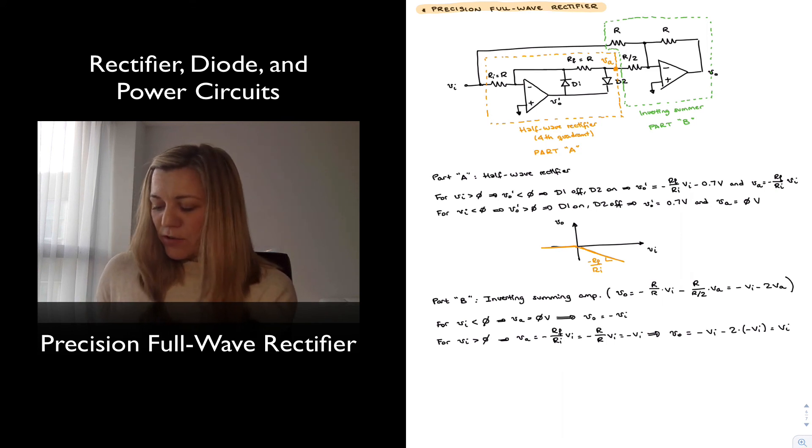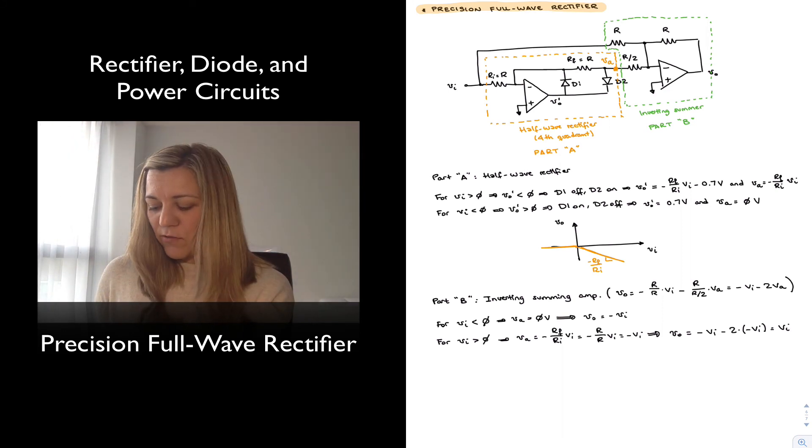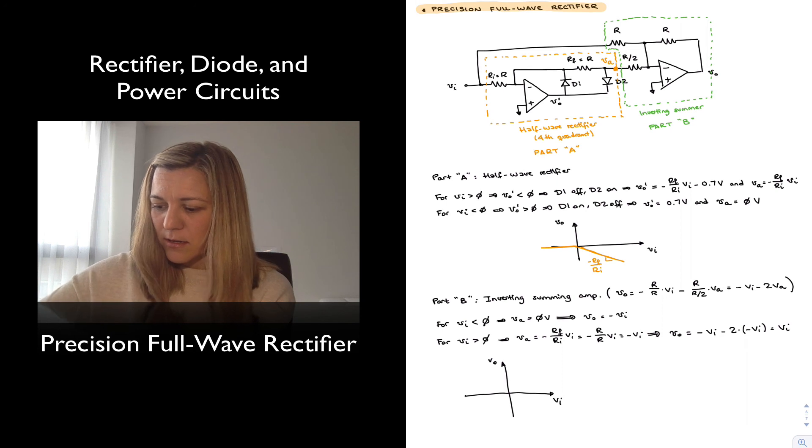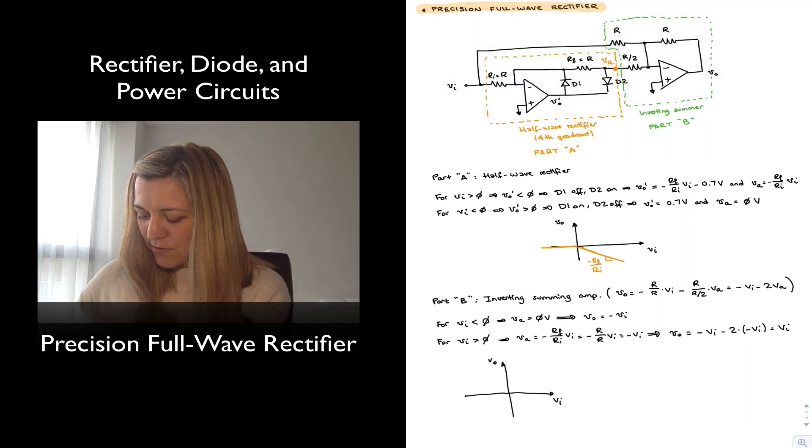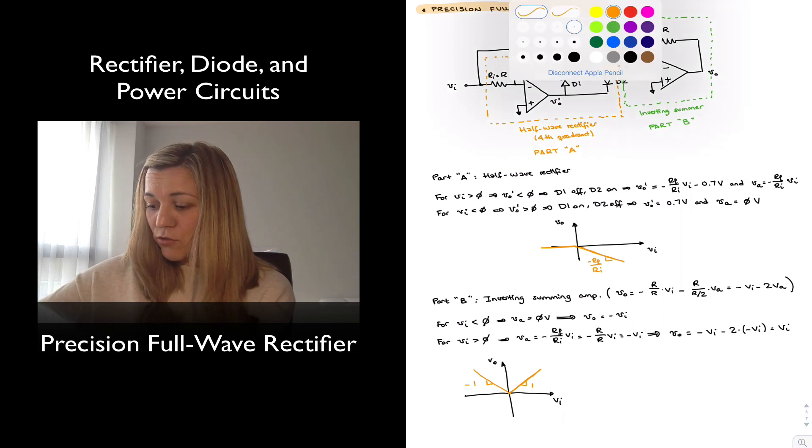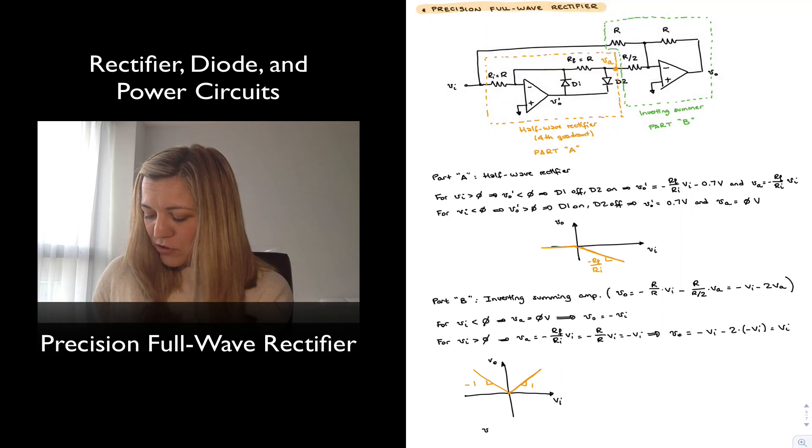So notice for negative values of Vin, Vout is equal to negative Vin. For positive values of Vin, Vout is equal to Vin. If I wanted to represent this in my voltage transfer characteristic plot, Vout versus Vin, I will have a straight line with a slope of 1 for positive values of Vin and a straight line with a slope of negative 1 for negative values of Vin.